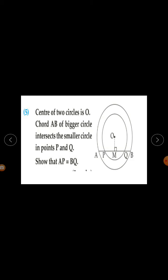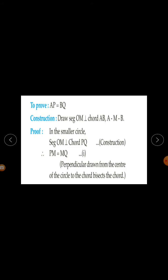Question number 5. The center of two circles is O. Chord AB of the bigger circle intersects the smaller circle at points P and Q. We have to prove that AP is equal to BQ.